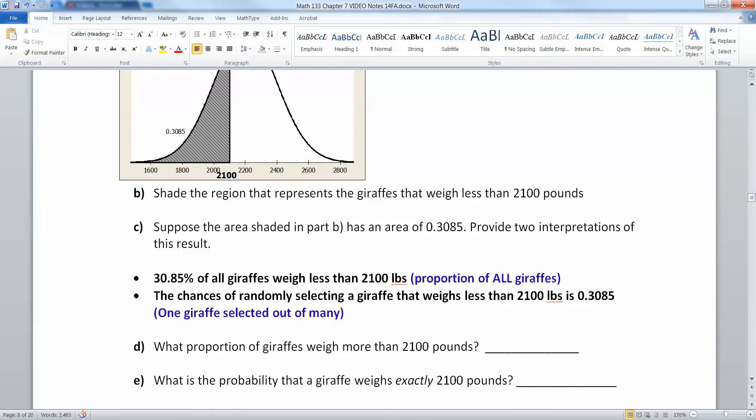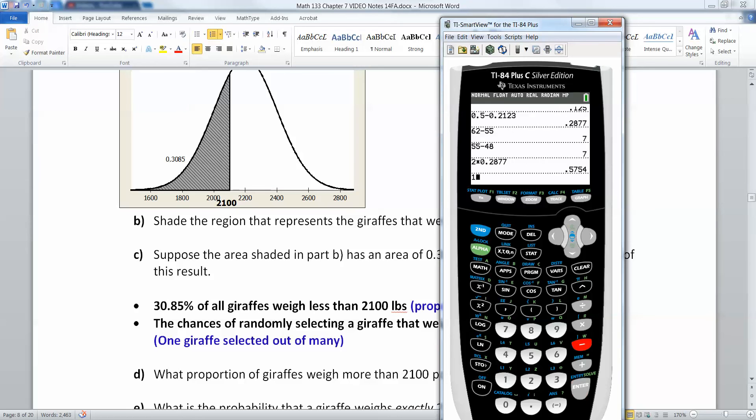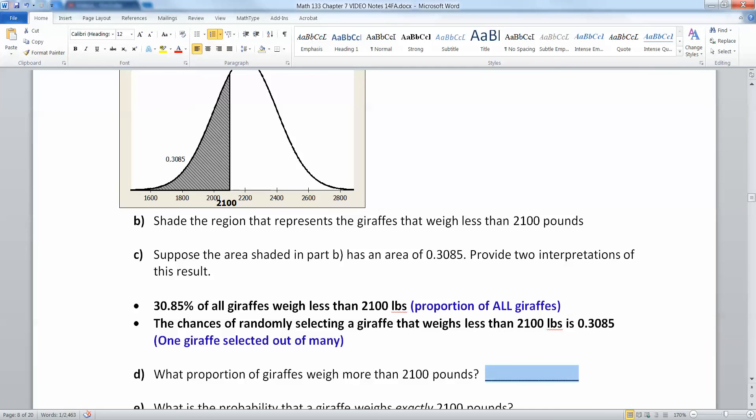Now if this is the case and we know that the proportion that weigh less than 2100 pounds is 0.3085, that'd be the probability or 30.85 percent as a proportion. What proportion weighs more than 2100? Well remember the entire curve makes one, so if you just take one minus 0.3085, you'll have 69.15 percent.